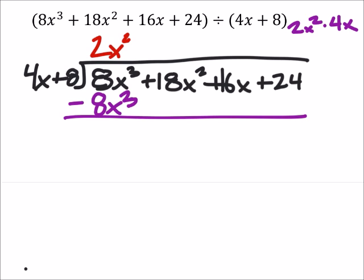But I also have to take that 2x squared and multiply it by the 8 as well. So 2x squared times 8, that would give me 16x squared. But I'm going to subtract those out as well.